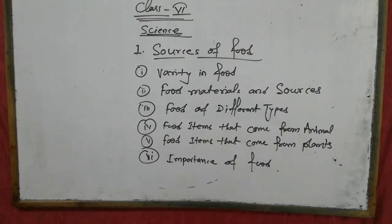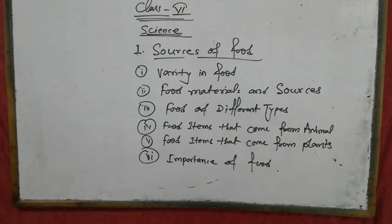The next topic is food of different types. That means different organisms eat different types of food. You know what an organism is — organisms are those who live on earth. If they are small, then they are micro-organisms. So different organisms eat different types of food.